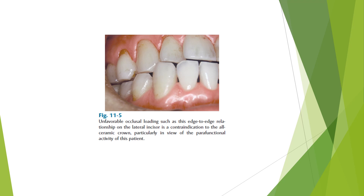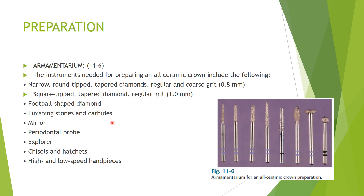Preparation armament: narrow round-tipped tapered diamonds are used — regular grit. The bur types include tapered fissure burs, football-shaped burs, round burs, and flame-shaped burs. Other instruments include finishing stones, carbide burs, mirror, probe, explorer, chisel, hatchet, and high and low-speed handpieces — though high speed is primarily used.